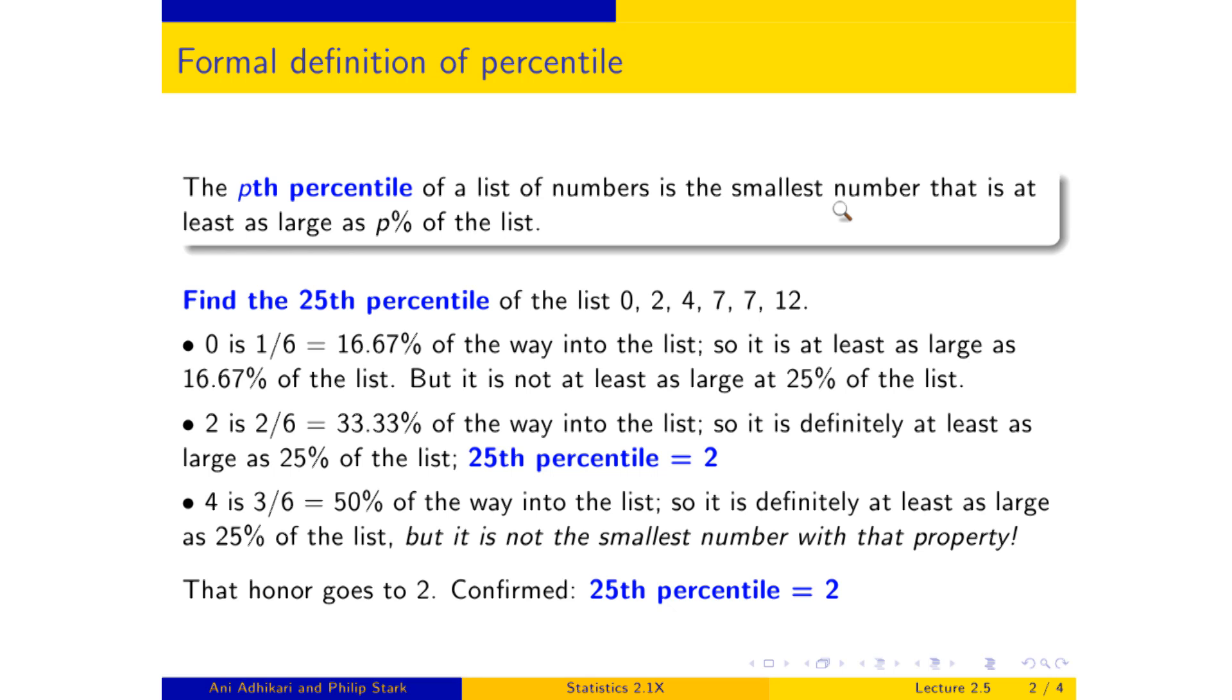And just to make sure that everybody understands why the smallest number matters here, it's because you're saying it's a number that is at least as large as p percent of the list. So it's at least as large as 25 percent of the list. Well, look at number 12. That's at least as large as everything on the list. So it's at least as large as 25 percent. It's at least as large as 50 percent. And yet you don't want 12 to be every single percentile in the world. So what they're saying is try and get as close to 25 percent as you can from the top.